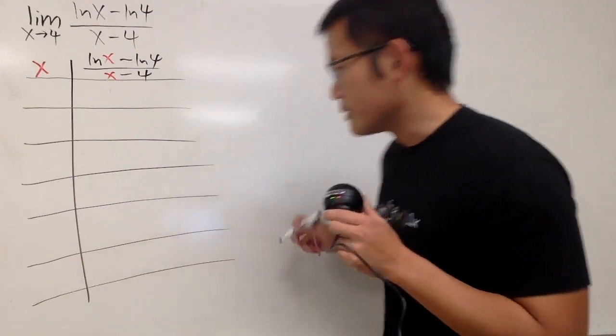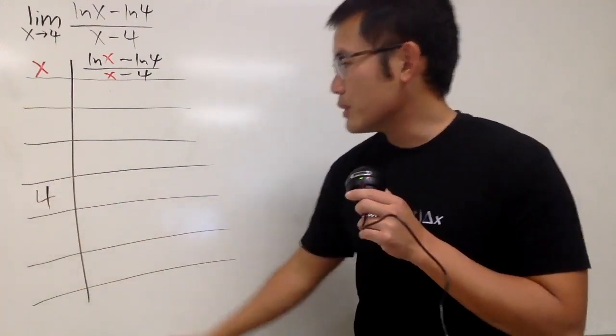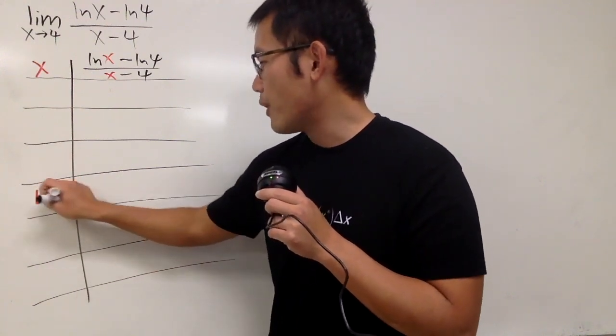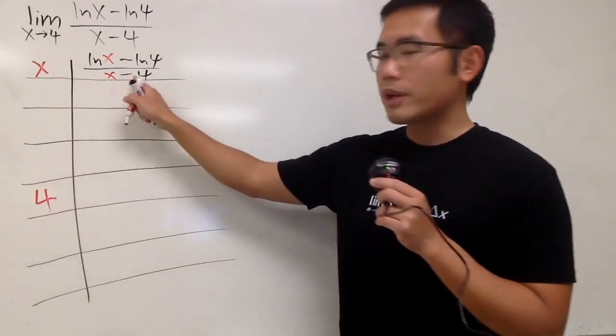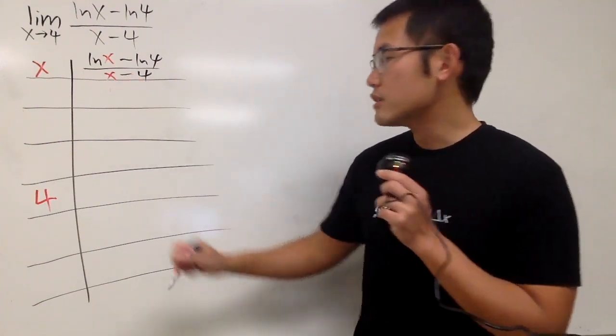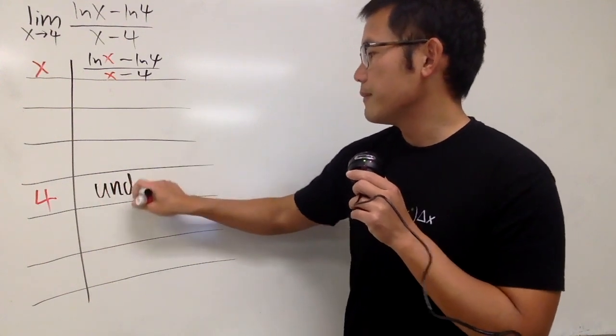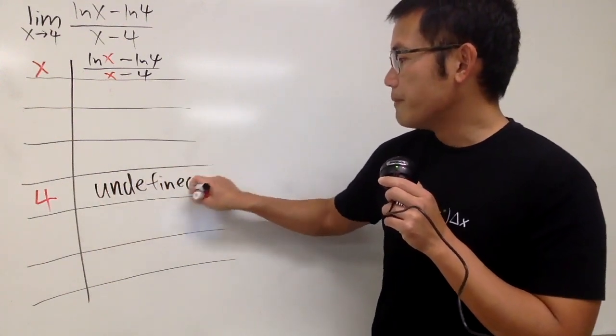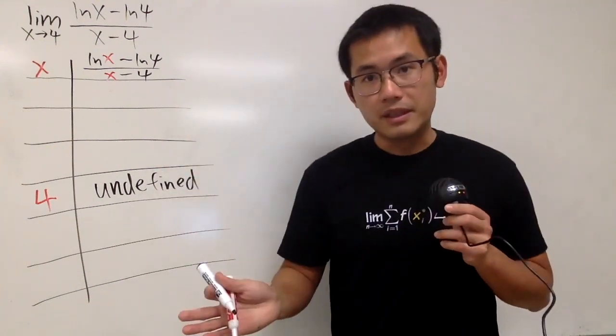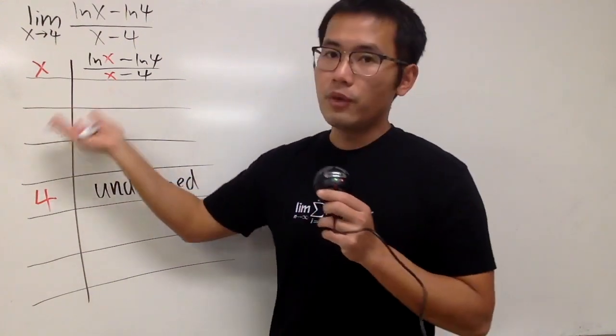The expression that we are dealing with is ln x minus ln 4, over x minus 4. Let me just pick several points. We'll do a table of 7 values, and let me just put a 4 right in the middle. Let's just start from the right-hand side.